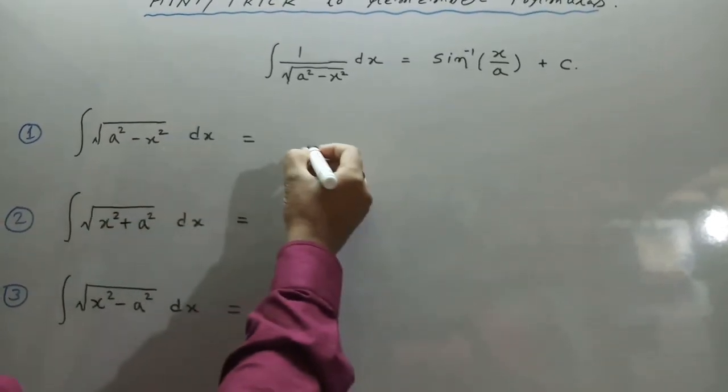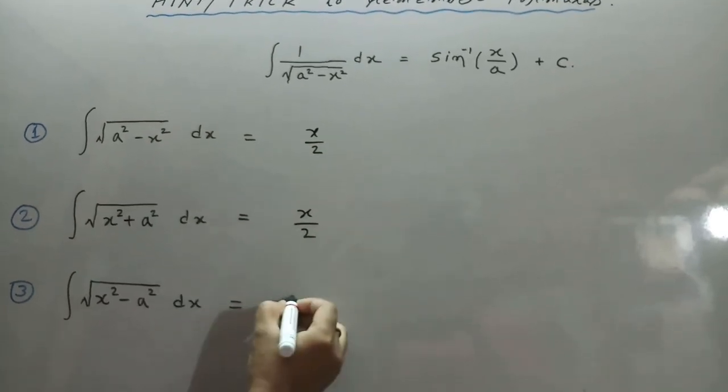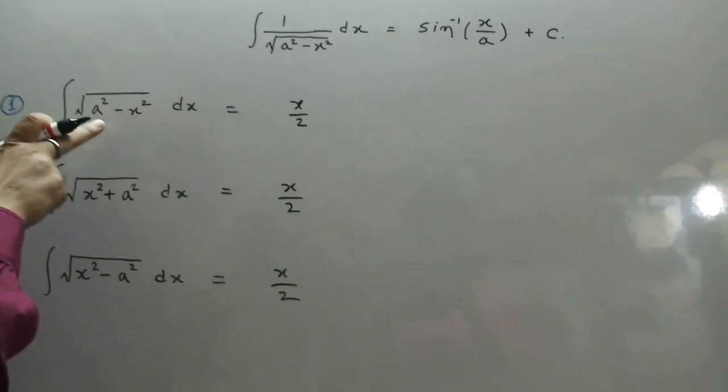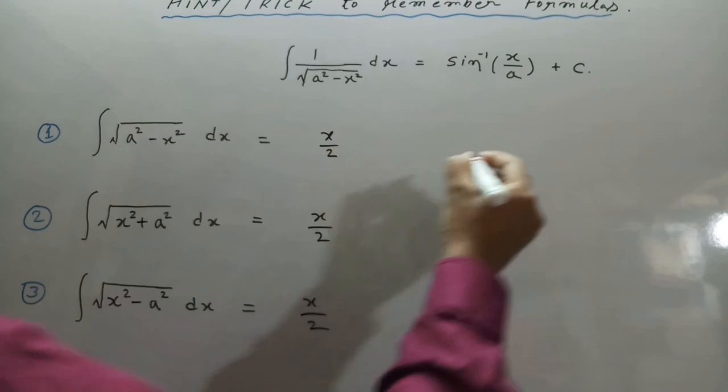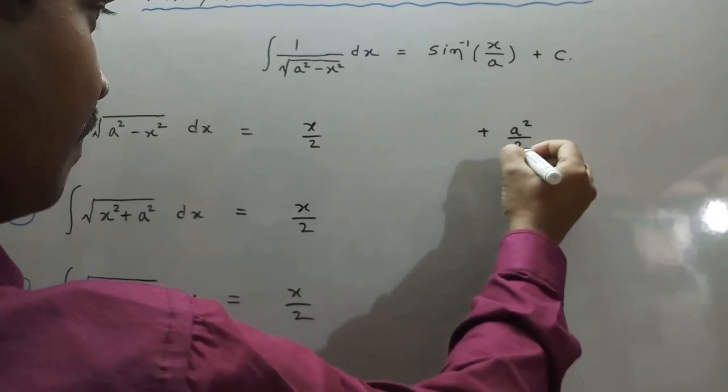The formula for this is x/2. Here, carefully notice plus a². Therefore, this is plus a²/2.